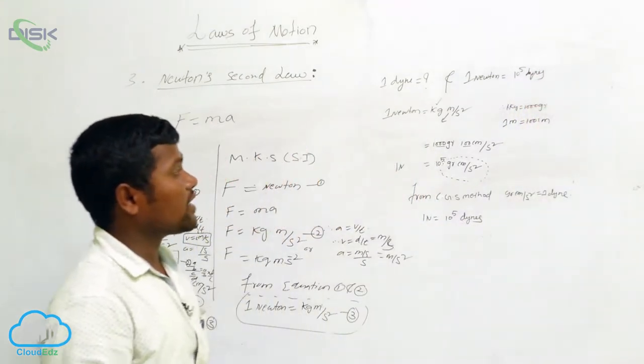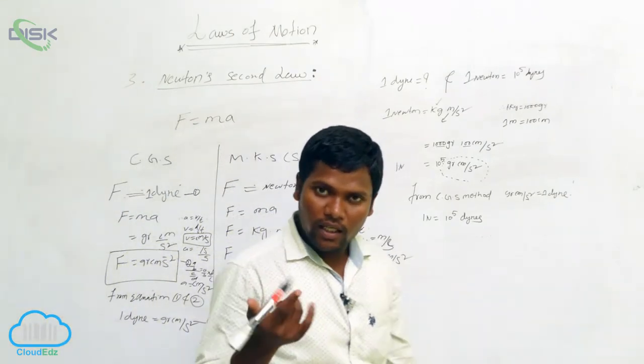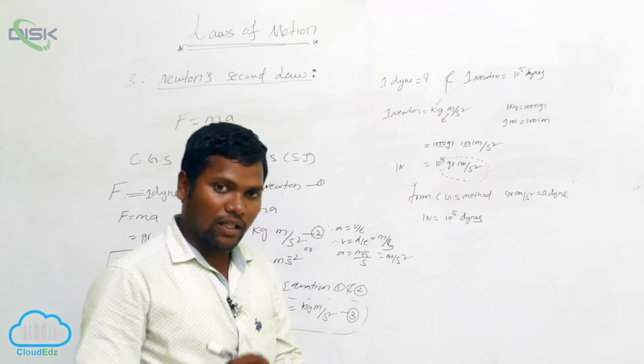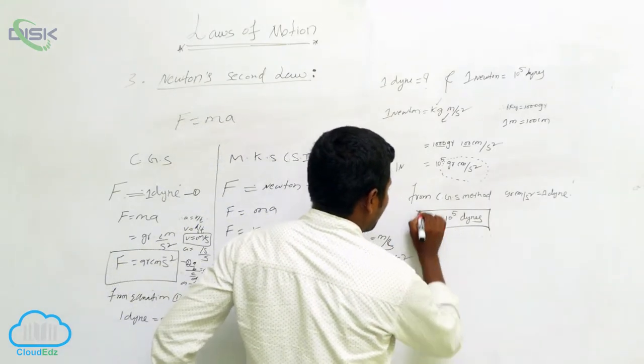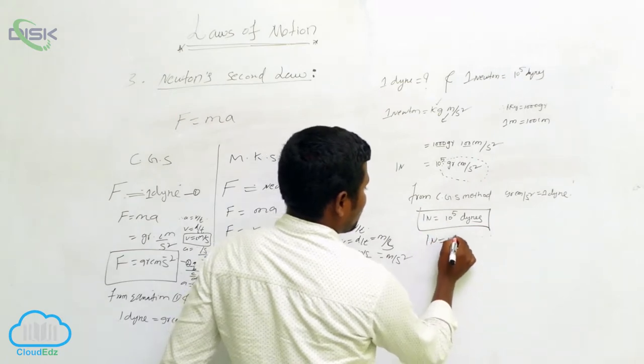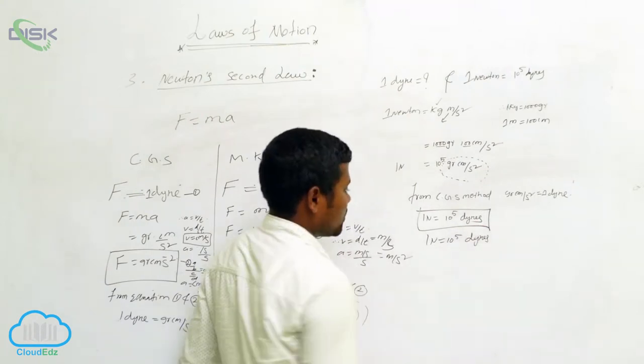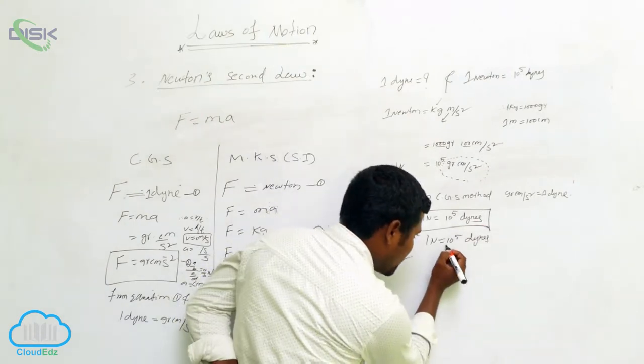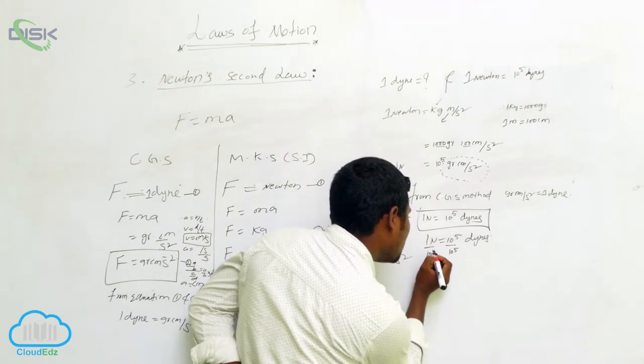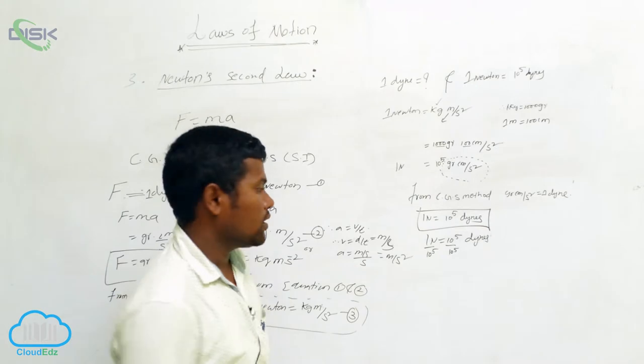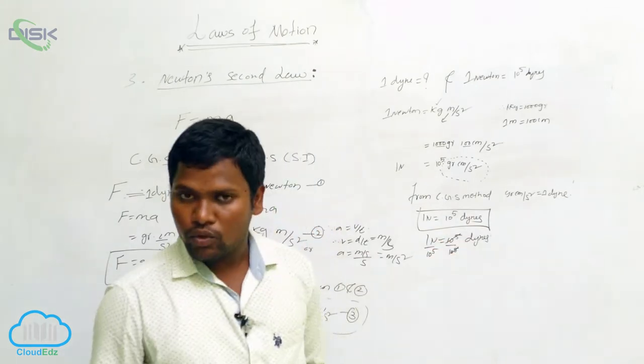Next, I want to find 1 dynes equals how much. If you know one quantity, you can automatically derive another quantity easily. See what is here? 1 Newton equals 10 to the power of 5 dynes. Now I am dividing both sides by 10 to the power of 5. Then what happens? This 10 to the power of 5 and this 10 to the power of 5 both will get cancelled.